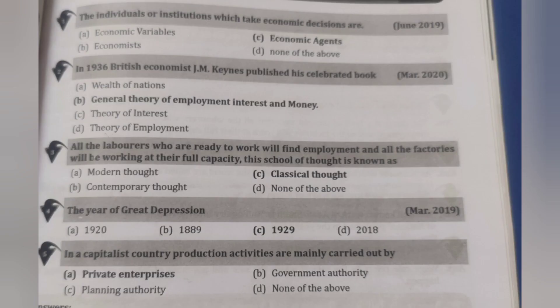The individual or institution which takes economic decisions is called an economic agent. In 1936, British economist J.M. Keynes published his celebrated book General Theory of Employment, Interest and Money. The classical thought holds that all laborers who are ready to work will find employment and all factories will work at full capacity. The year of the Great Depression is 1929.